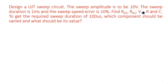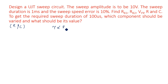VYY is the supply voltage given to the R and C network. To get the required sweep duration of 100 microseconds, which component should be varied — either R or C? The time constant is proportional to resistance into capacitance; we know that tau equals R into C. If you change either capacitance or resistance, it will impact the value of tau.